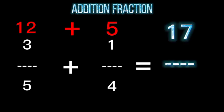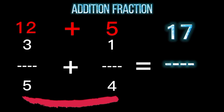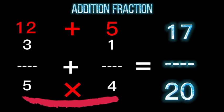At the lower portion, we have 5 and 4, and we need to multiply these two. 5 times 4 equals 20. The final answer to this problem is 17 over 20.